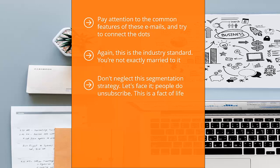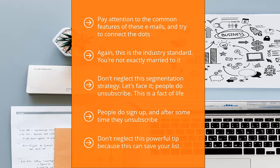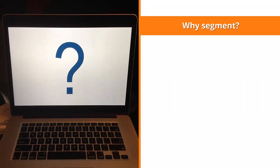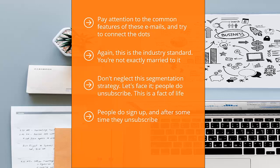Don't neglect this segmentation strategy. People do unsubscribe — this is a fact of life. Don't think that just because you work hard to offer the right incentives to the right people that they will remain loyal to your list. However, you can reduce your unsubscribe rate by simply asking people who wish to unsubscribe to change the update frequency of their membership on your list. Depending on your list automation software, you can offer list members a choice as to how frequently you will send them updates. This can save your list — instead of the vast majority unsubscribing, you can hang on to a large chunk of them and possibly convert them into buyers later.